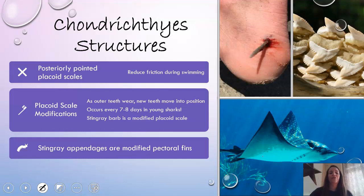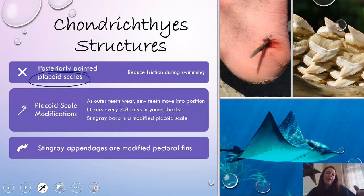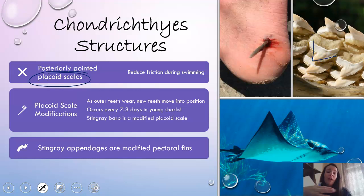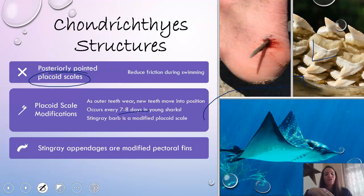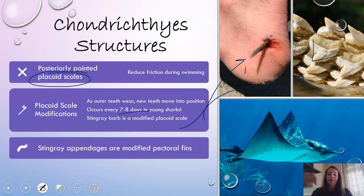Some important structures of chondrichthyes: they have posterior pointed placoid scales, which help reduce friction during swimming. If you were to ever pet a shark or a ray and rub them backwards, they feel kind of like sandpaper. The teeth have a similar structure to the scales. Those scales are really cool because they can modify into different things. Sharks have rows and rows of teeth that move into position as they wear out, and every seven to eight days in young sharks, they have new teeth — you can imagine how sharp those are. A stingray barb is also a modified placoid scale located on the tail of a stingray. Stingrays also have large fins that are actually modified pectoral fins.